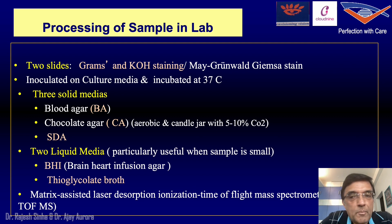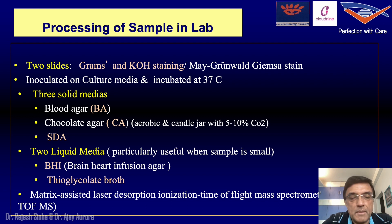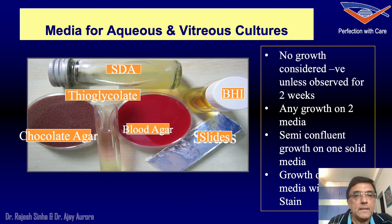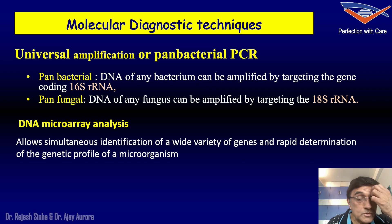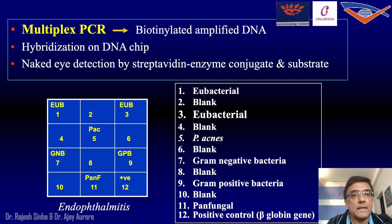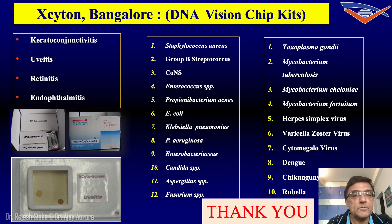For processing a sample, you need two slides for gram and KOH stains, three solid media — blood agar, chocolate agar, or Sabouraud dextrose agar — and two liquid media. You could also subject the patient's samples to PCR analysis, either multiplex PCR or through XCytol, which is based in Bangalore.